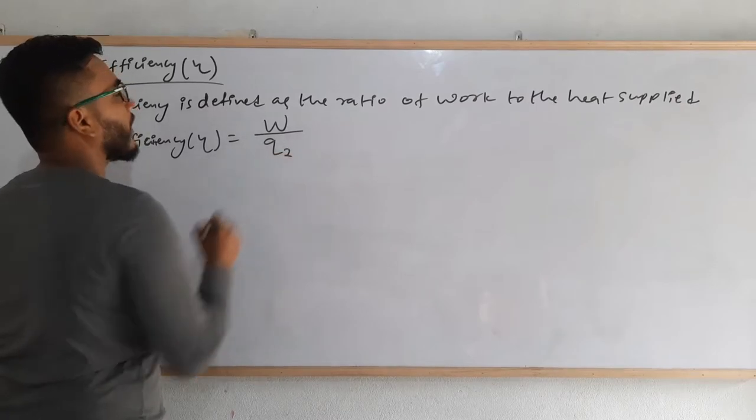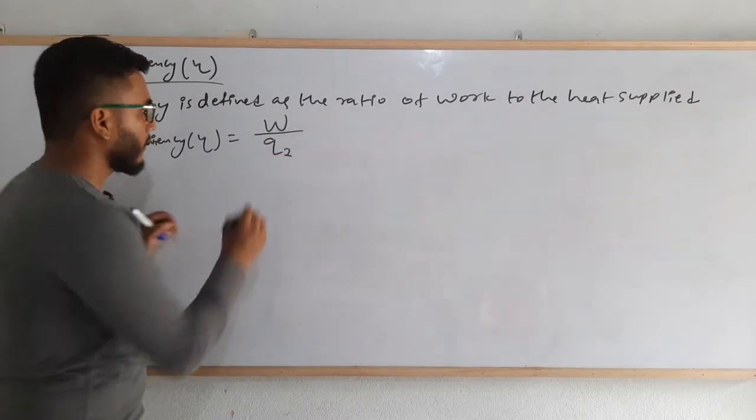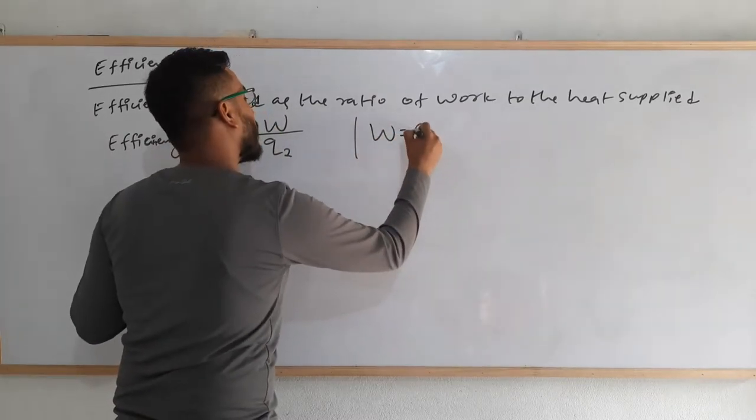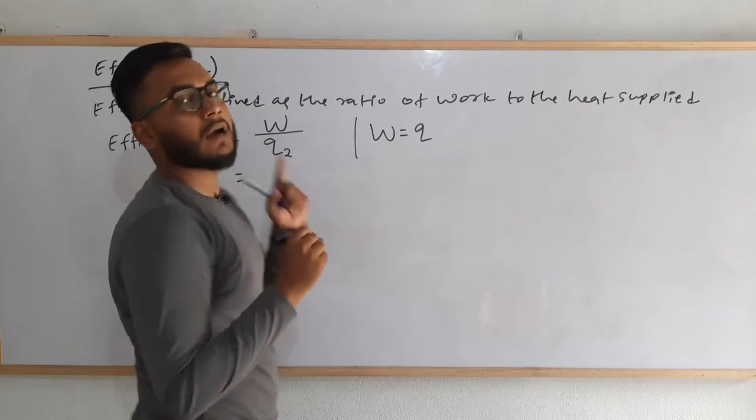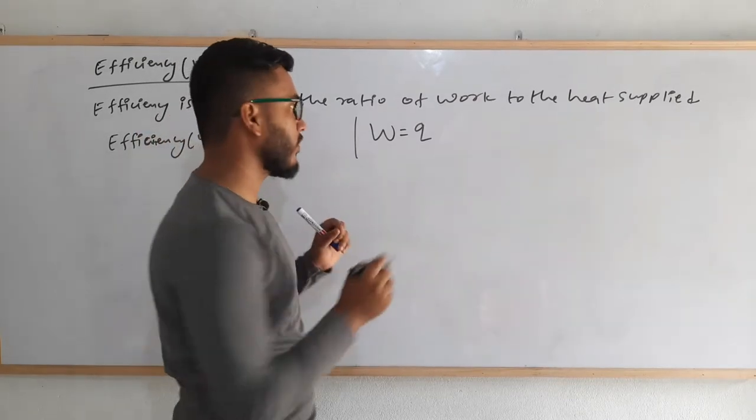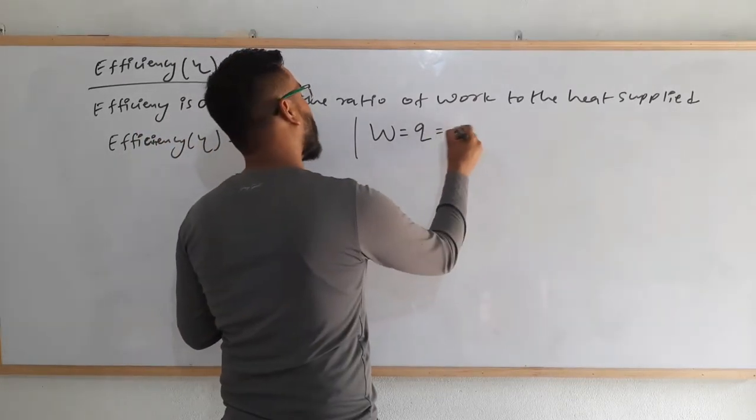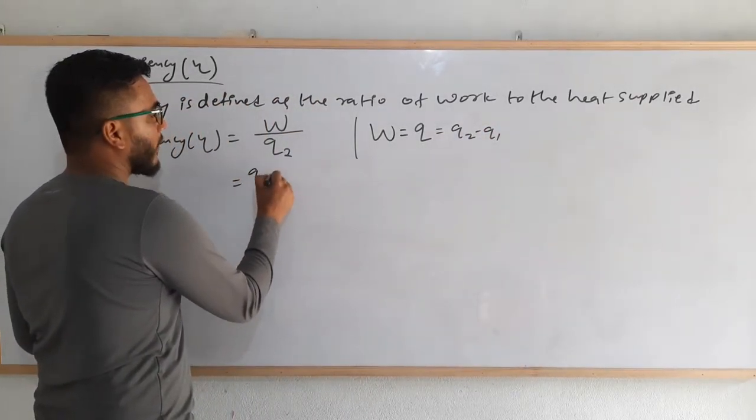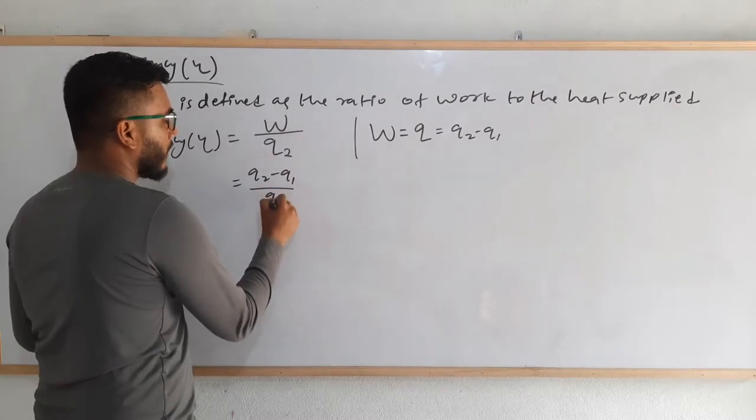Efficiency is given by the formula: eta is equal to work divided by heat. What was the heat energy supplied? Q2. And what is the meaning of this work? We know that W is equal to Q in the case of Carnot cycle or cyclic process. So W equals Q in, Q means Q2 minus Q1.